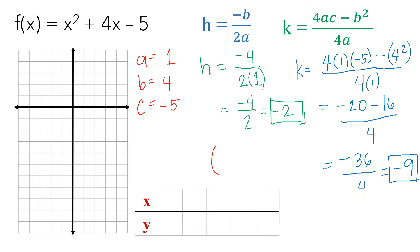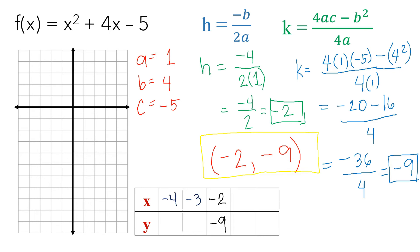Writing our vertex: it is (negative 2, negative 9). We will use this vertex to complete a table of values for graphing, placing negative 2 and negative 9 in the middle. For x values, we subtract and add 1 to negative 2: subtracting gives negative 3, then negative 4; adding gives negative 1, then 0. We will now solve for the corresponding y values using the original equation.